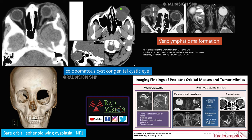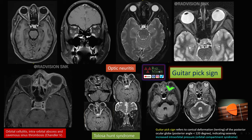Here is a case of colobomatous cyst or congenital cystic eye. This is a typical venolymphatic malformation with multiple fluid-fluid levels at the central orbit — a classical appearance. Other congenital conditions mimicking a tumor include persistent fetal vasculature and Coats disease, both of which can mimic retinoblastoma in the context of orbital masses.